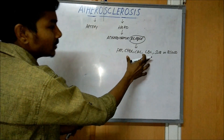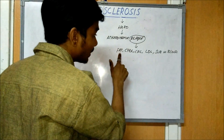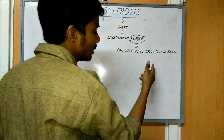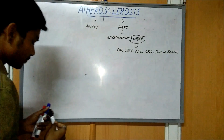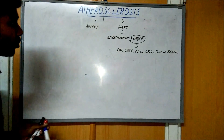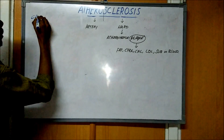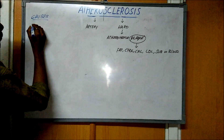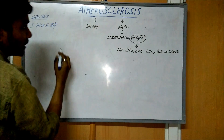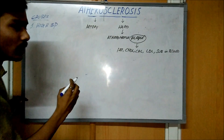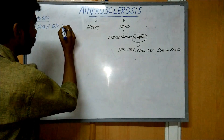The substances which make the plaque are: fat, cholesterol, calcium, low density lipoproteins, or any other substances in the blood. Now we will see what are the causes which lead to Arteriosclerosis. First, high blood pressure — a person having hypertension leads to high pressure in the arteries, which makes damage to the arteries and leads to Arteriosclerosis.